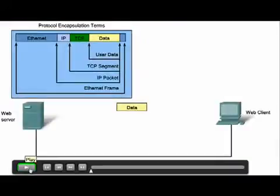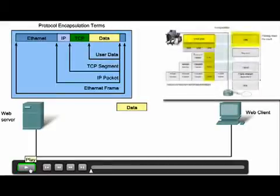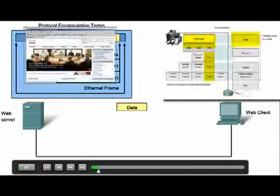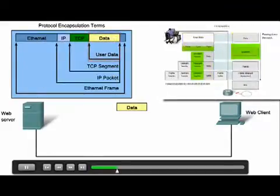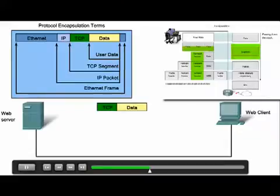When sending messages on a network, the protocol stack on a host operates from top to bottom. In this web server example, we can use the TCP-IP model to simulate the process of this web server sending a message to the web client. First, the application layer protocol HTTP begins the process by sending the data to the transport layer. Here, the application data is broken into TCP segments. Each TCP segment is given a label called a header containing information about which process running on the destination computer should receive the message.